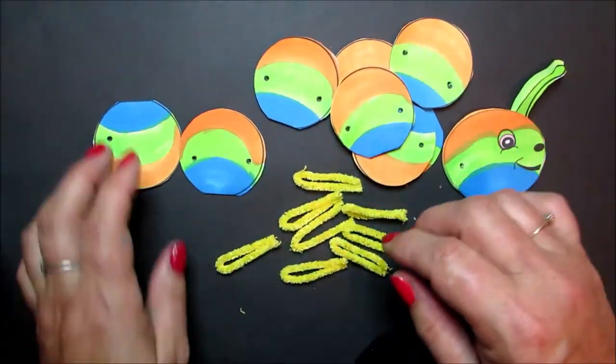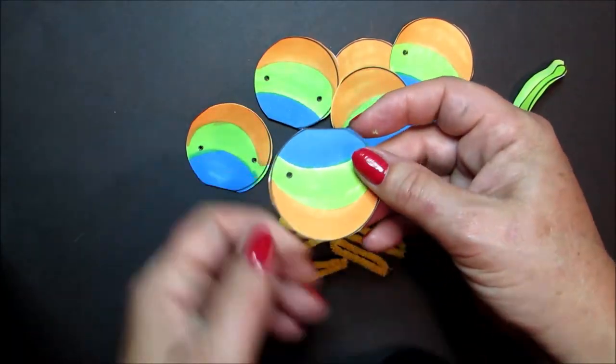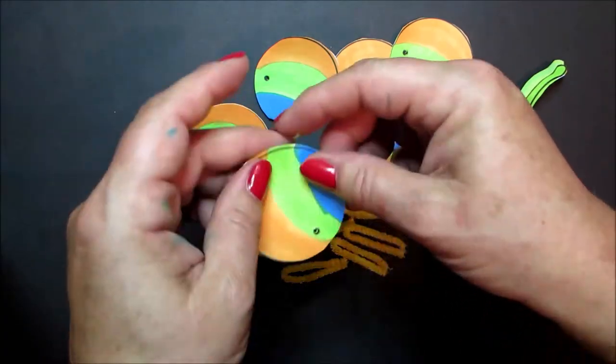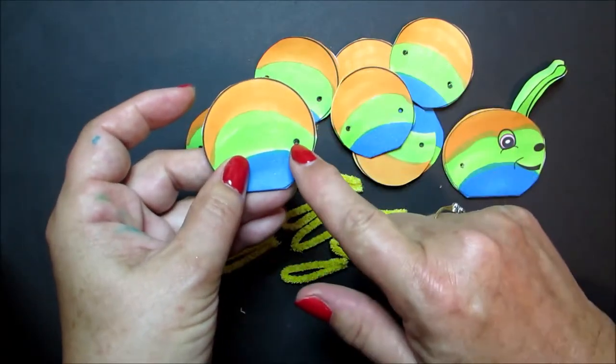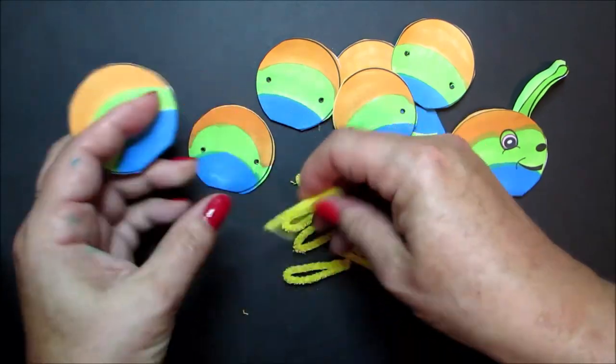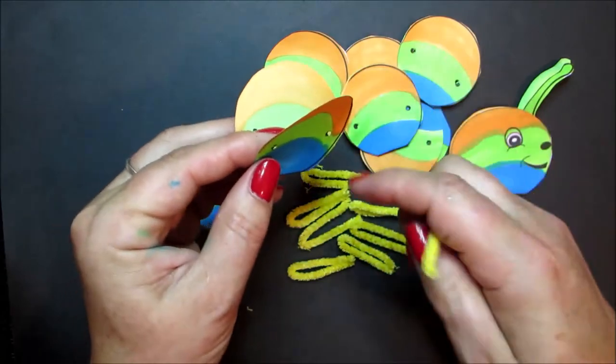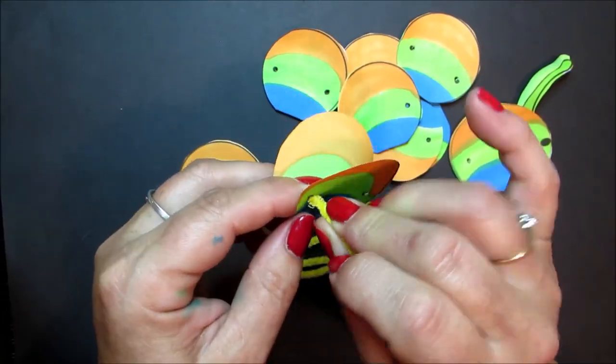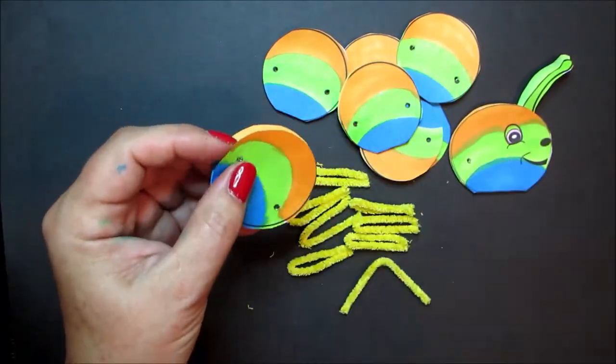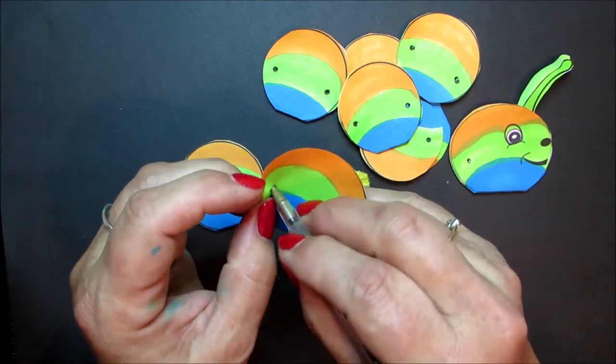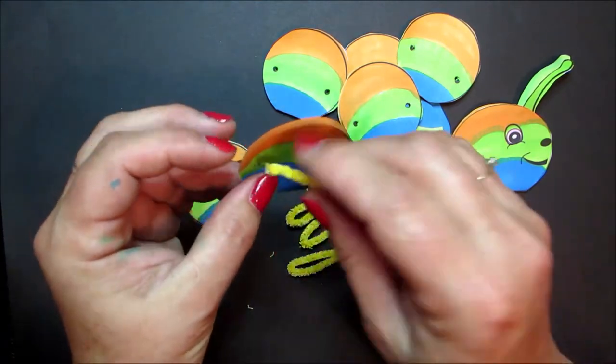And now it's time to start assembling. So take the tail piece. The flat edge needs to be along the bottom. And the hole needs to be on the right hand side. So take your first body part. If your pipe cleaner doesn't go through easily, you need to make your holes a little bit bigger.